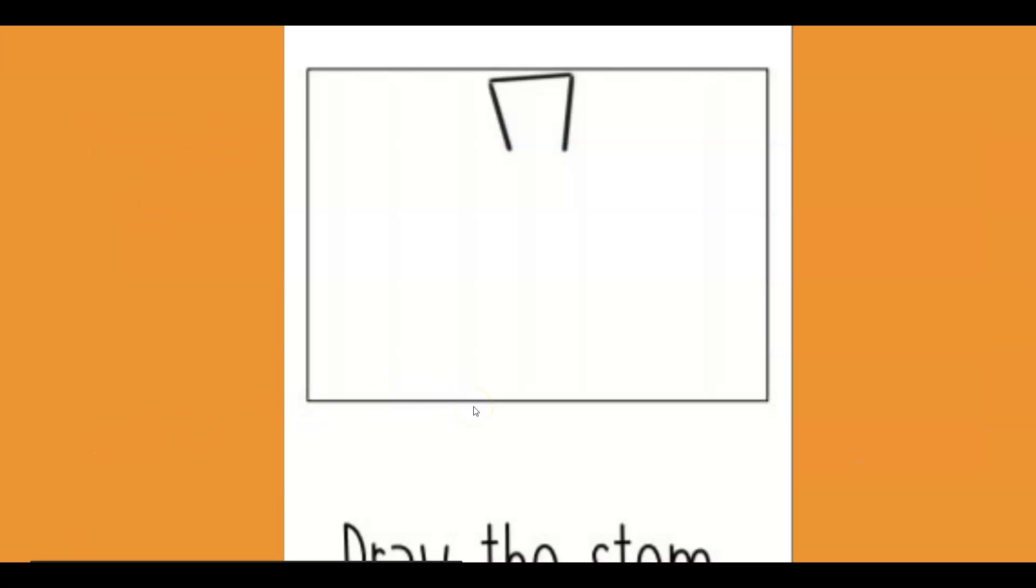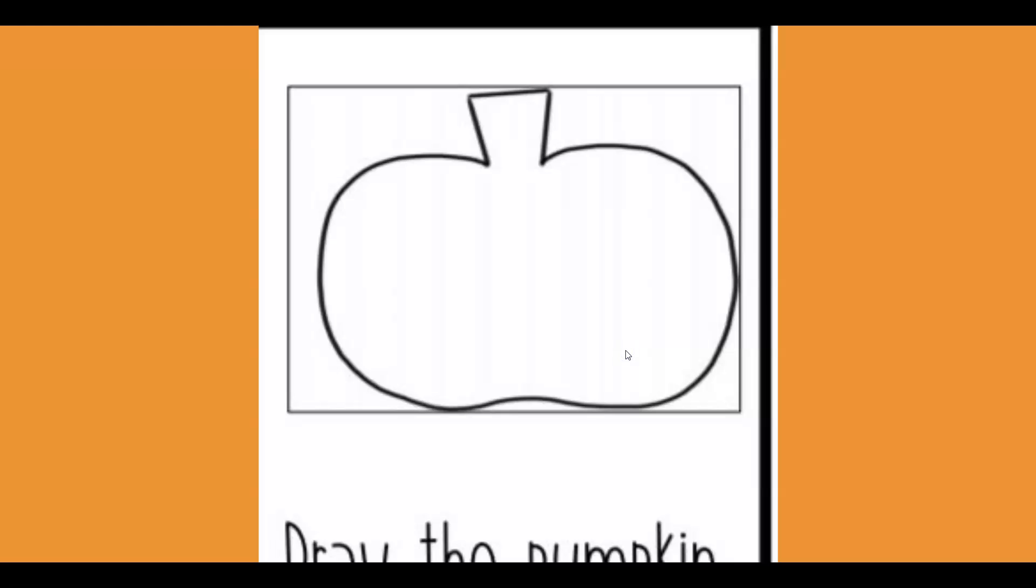So first, you are going to draw the stem. Next, you will draw the pumpkin. So from the bottom of the stem, you can loop around, go down, and then remember the bottom of the pumpkin has kind of two little bumps at the bottom, which help it stand. And then you're gonna loop back around to the bottom of the stem.